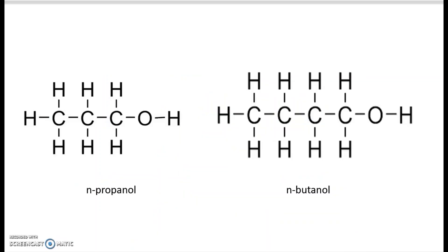Just to refresh your memory, these are the two compounds that we used in both the boiling point and the GC lab. Propanol is the three-carbon compound. We can tell which one took longer because the slower something moves, the longer it will take to move through the gas chromatograph column.